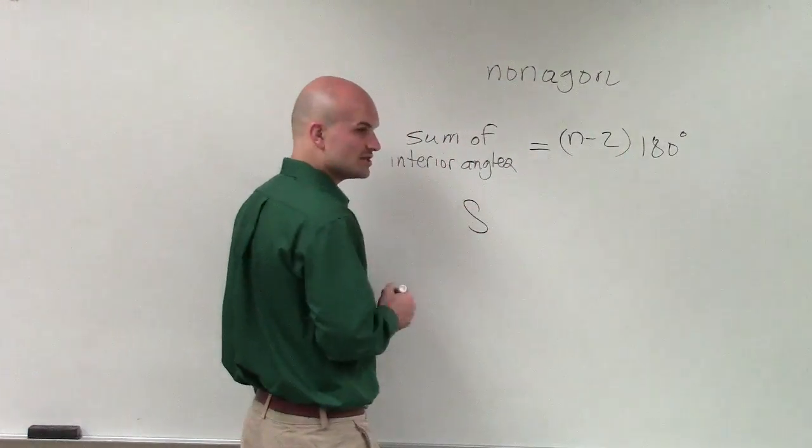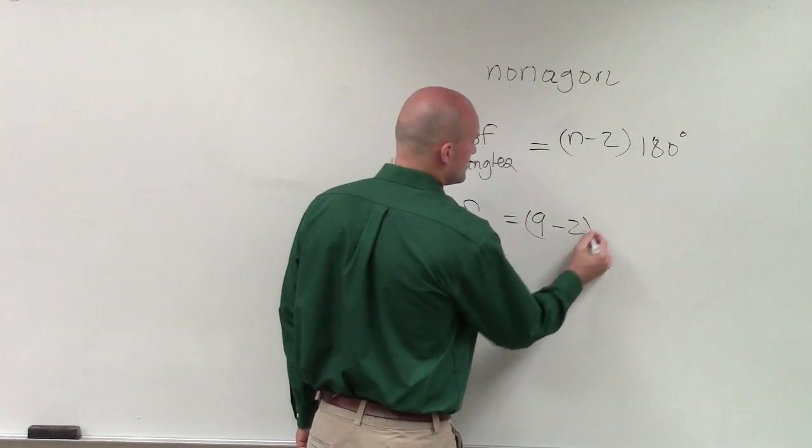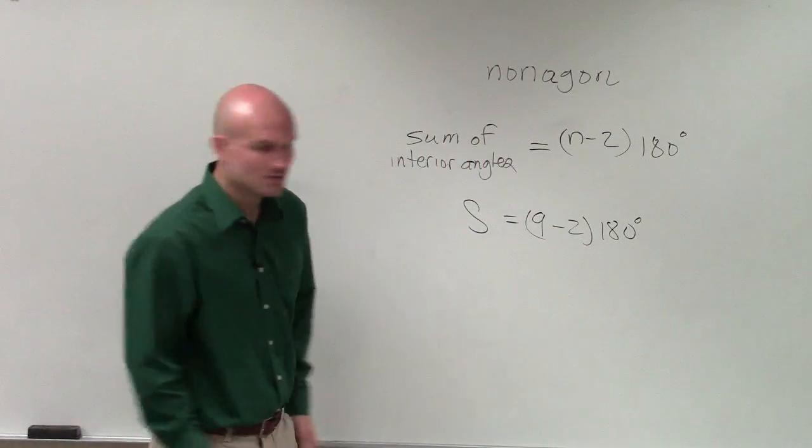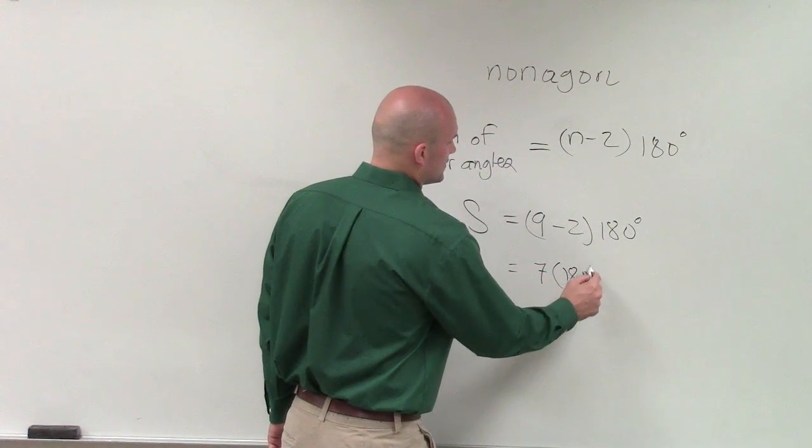So therefore, to find the sum, which I'll just represent with S, is going to be 9 minus 2 times 180 degrees. So 9 minus 2 is 7 times 180 degrees.